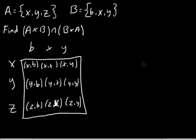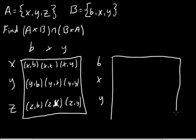Now we'll go over here and create a table for B times A. Let's put all our elements from B on the left side here: B, X, and Y. And then all our elements from A will go on top: X, Y, and Z. And then we'll create our ordered pairs.